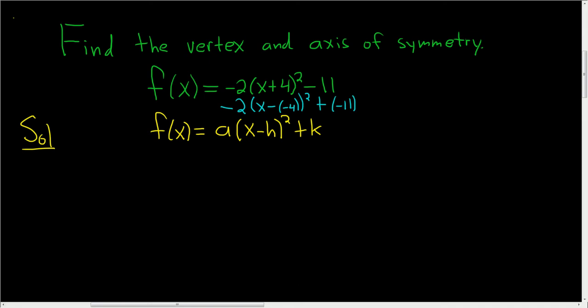So the vertex in the formula is (h, k), and the axis of symmetry in the formula is x equals h.